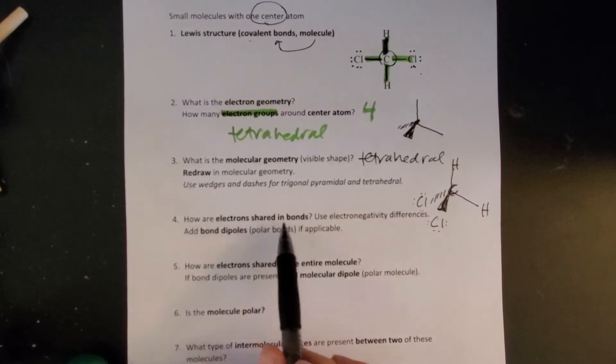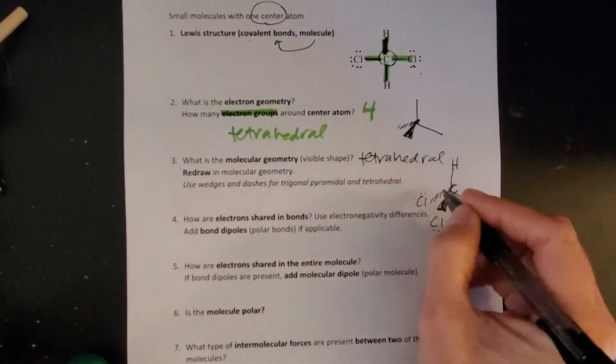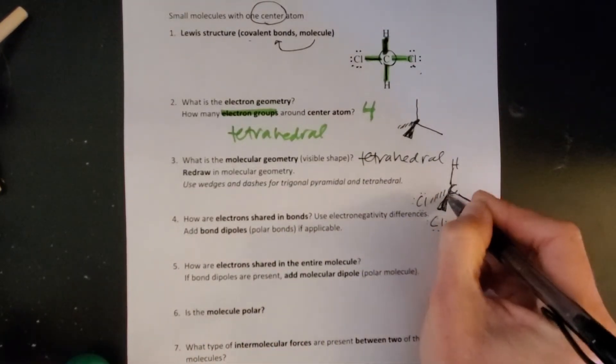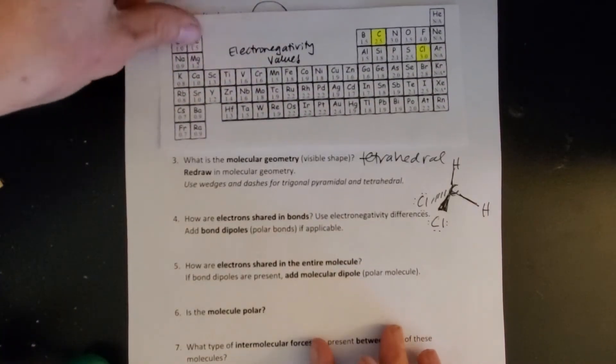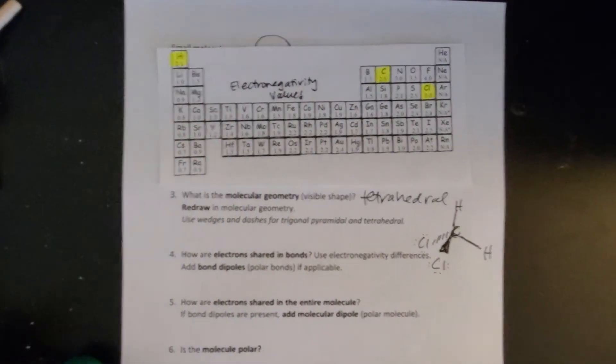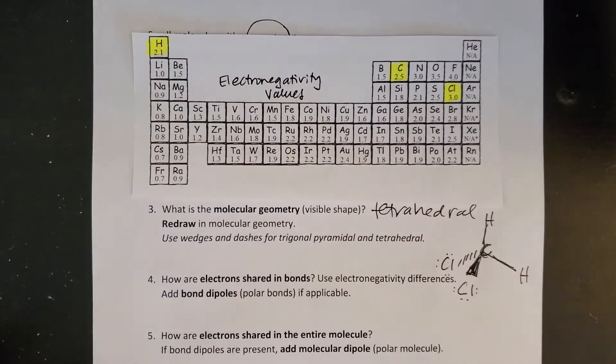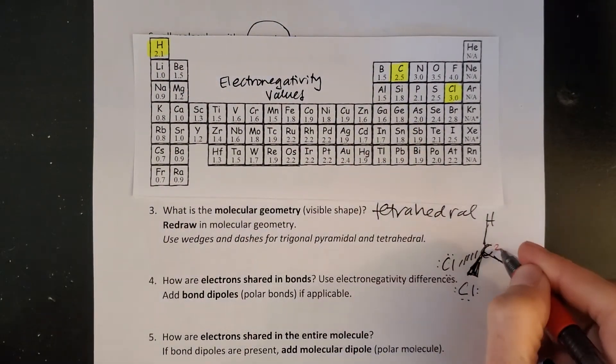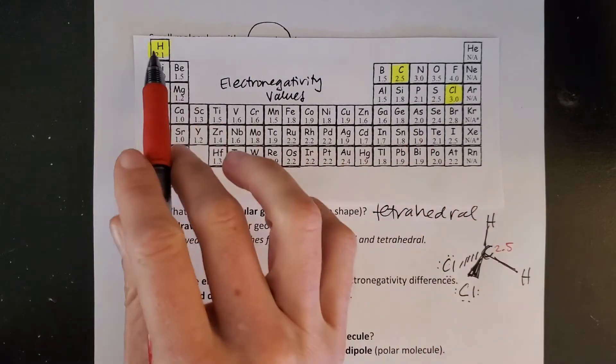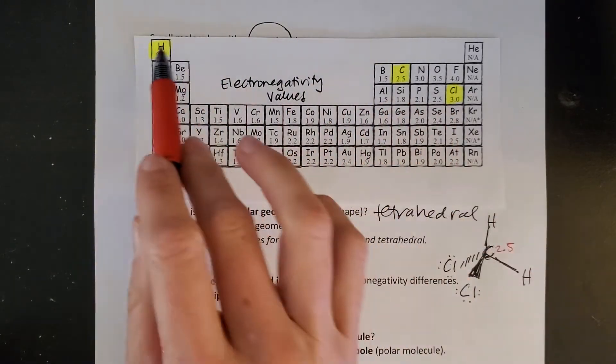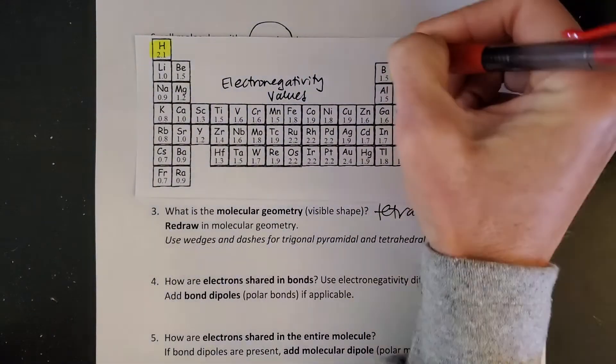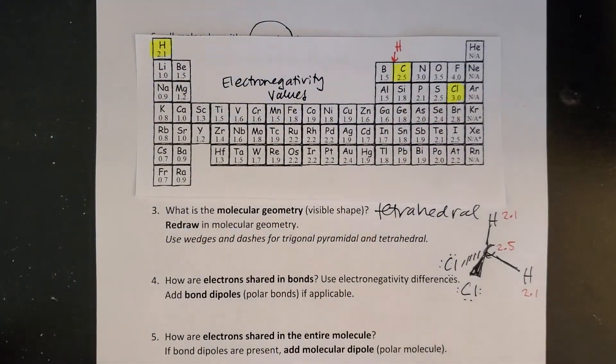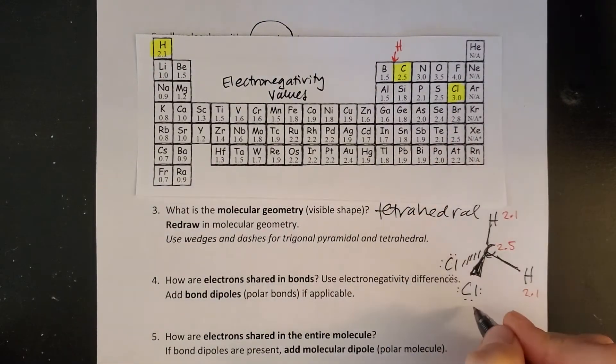Next we want to think about how electrons are shared in bonds. I have four bonds here to evaluate. To do that I need to pull out an electronegativity table with key elements highlighted. Carbon has an electronegativity of 2.5, hydrogen is 2.1, and chlorine is 3.0.